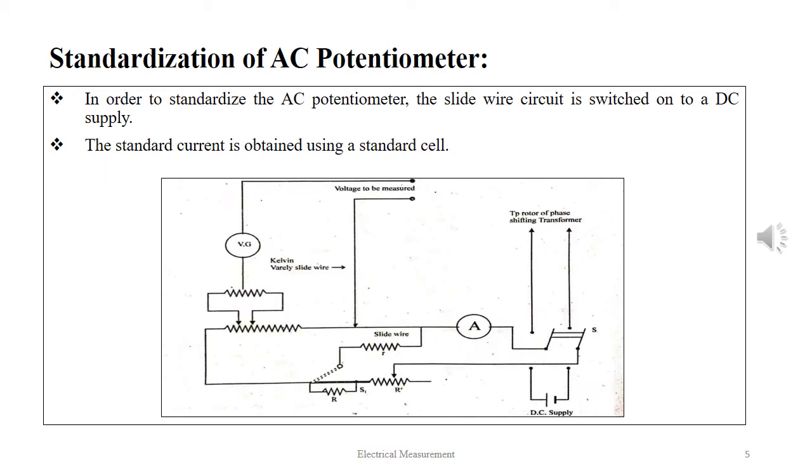As shown in the given figure, in order to standardize the AC potentiometer, the slide wire circuit is switched on to a DC supply. The standard current is obtained using a standard cell.